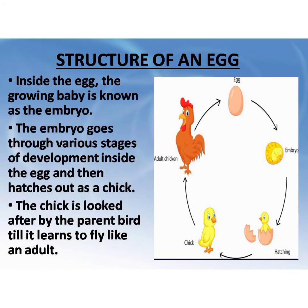Inside the egg, the growing baby is known as the embryo. The embryo goes through various stages of development inside the egg and then hatches out as a chick.